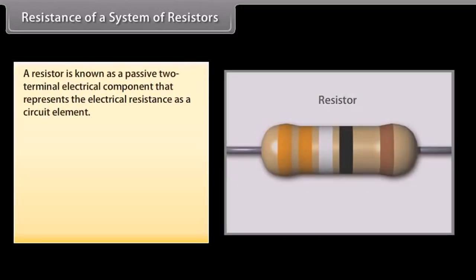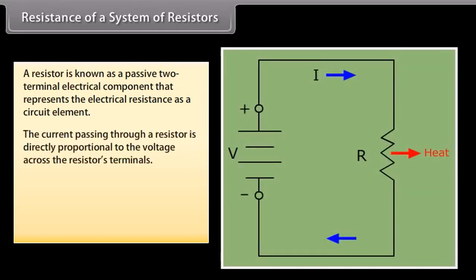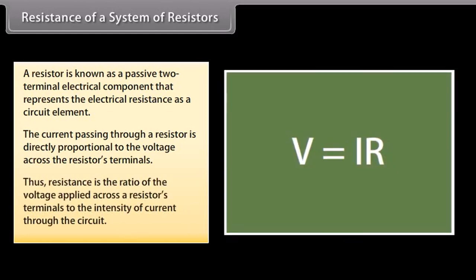A resistor is a passive two-terminal electrical component that represents the electrical resistance as a circuit element. The current passing through a resistor is directly proportional to the voltage across the resistor's terminals. Thus, resistance is the ratio of the voltage applied across a resistor's terminals to the intensity of current through the circuit.